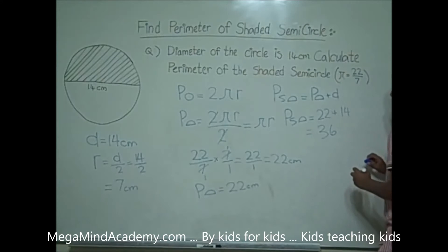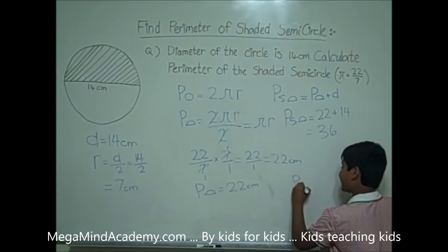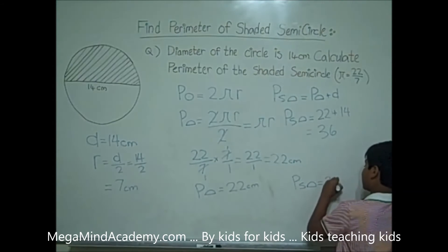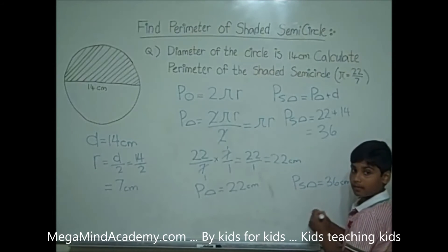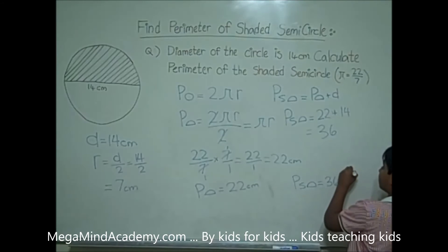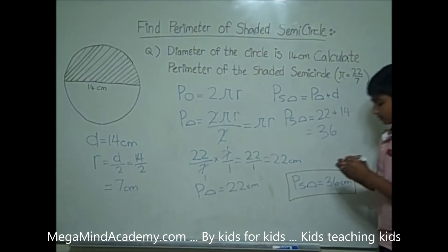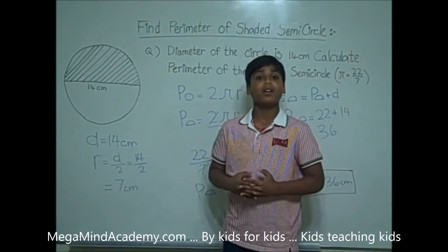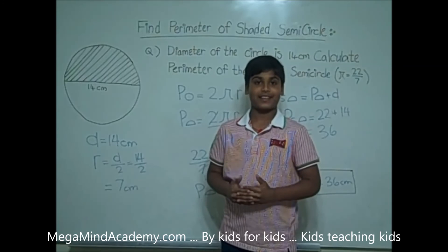So the perimeter of the shaded semicircle is equal to 36 centimeters. Today we learned about how to find the perimeter of the shaded semicircle. Thank you for watching this video.